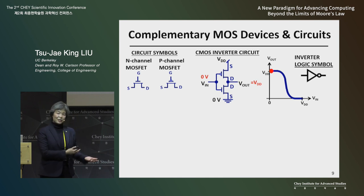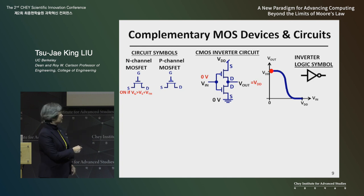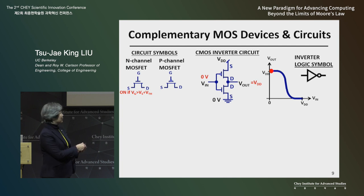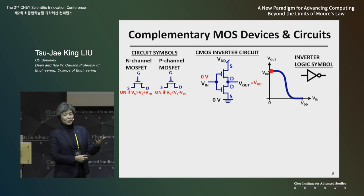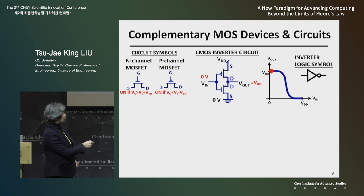We have two types of transistors. N-channel means that negative charge forms in the semiconductor to allow current to flow between source and drain. In order for that transistor to turn on, you need positive charge on the gate — so this transistor is only on if the gate voltage is higher than the source voltage. We also have a P-channel transistor with positive charge in the channel; for this device, the gate voltage must be lower than the source voltage for it to turn on.